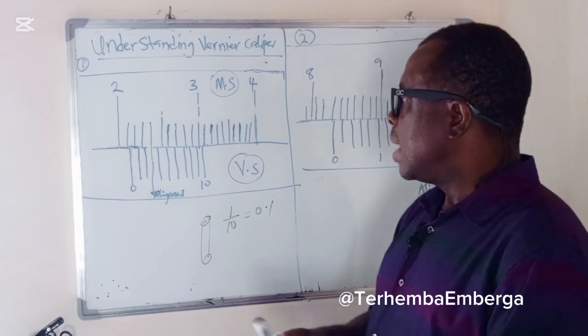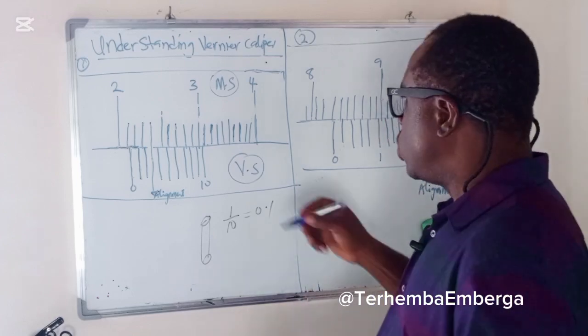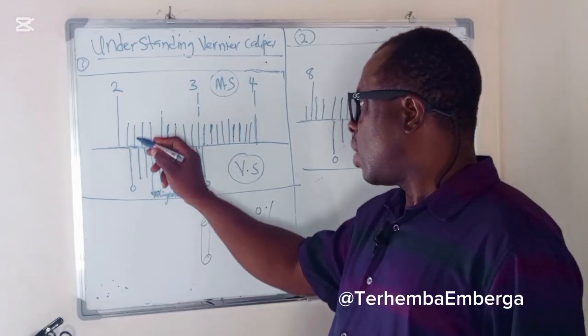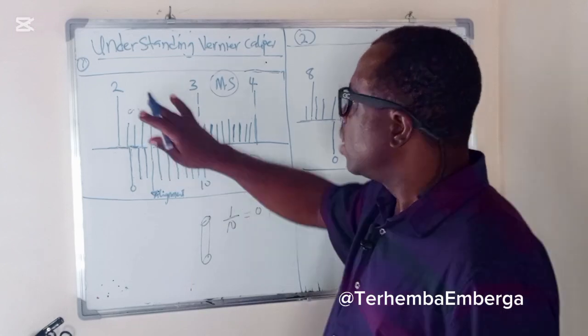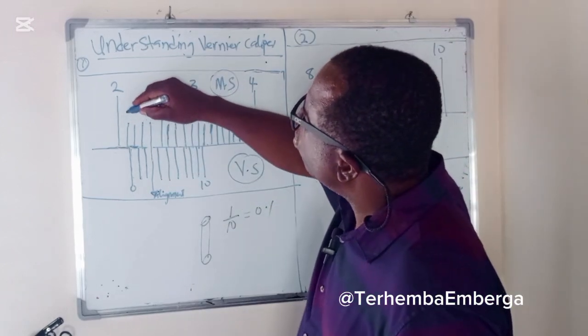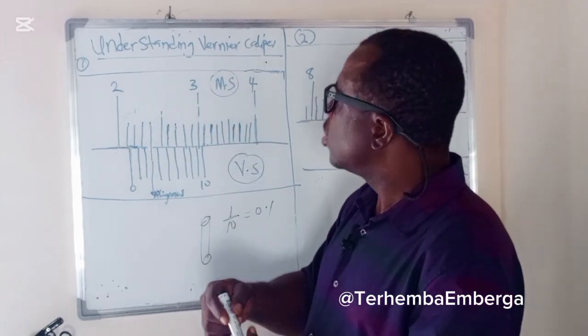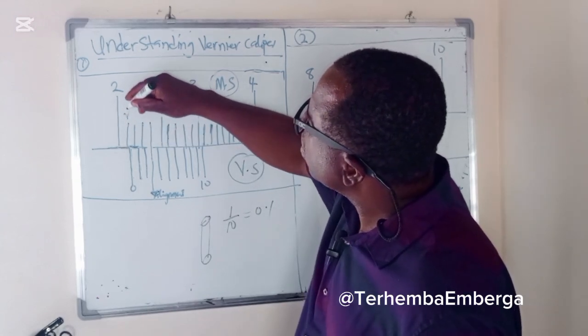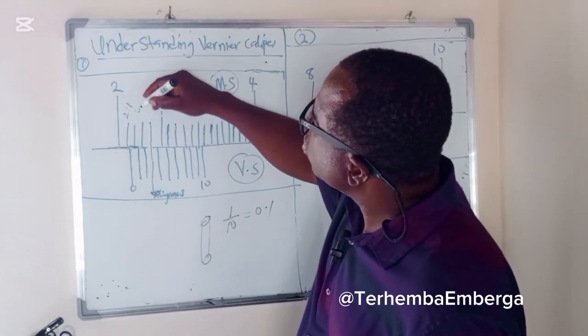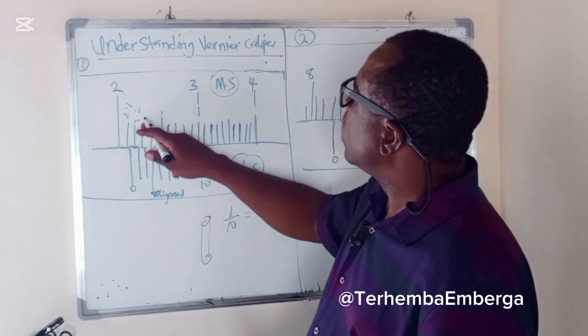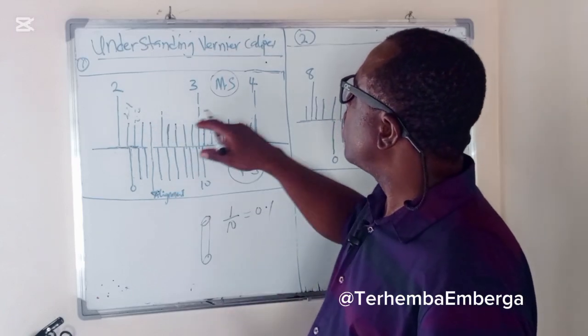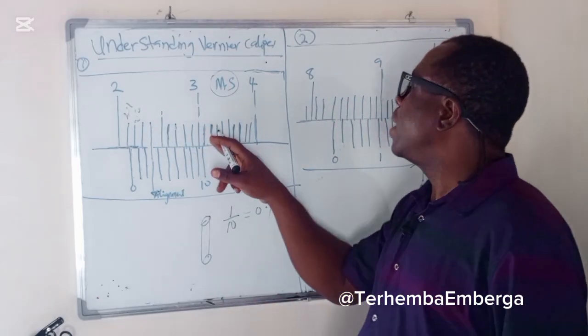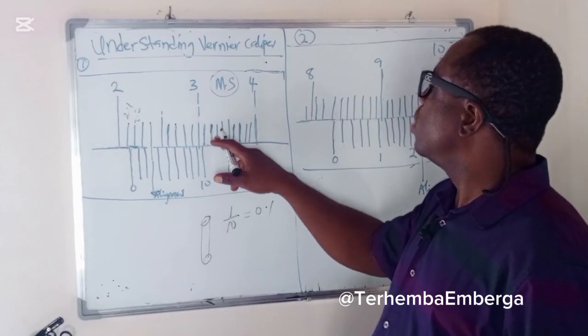So it means that the dimension between one division and another here is 0.1. So it means that here you have 2.1, 2.2, 2.3, 2.4, 2.5 and so on. 3.1, 3.2 and so on.